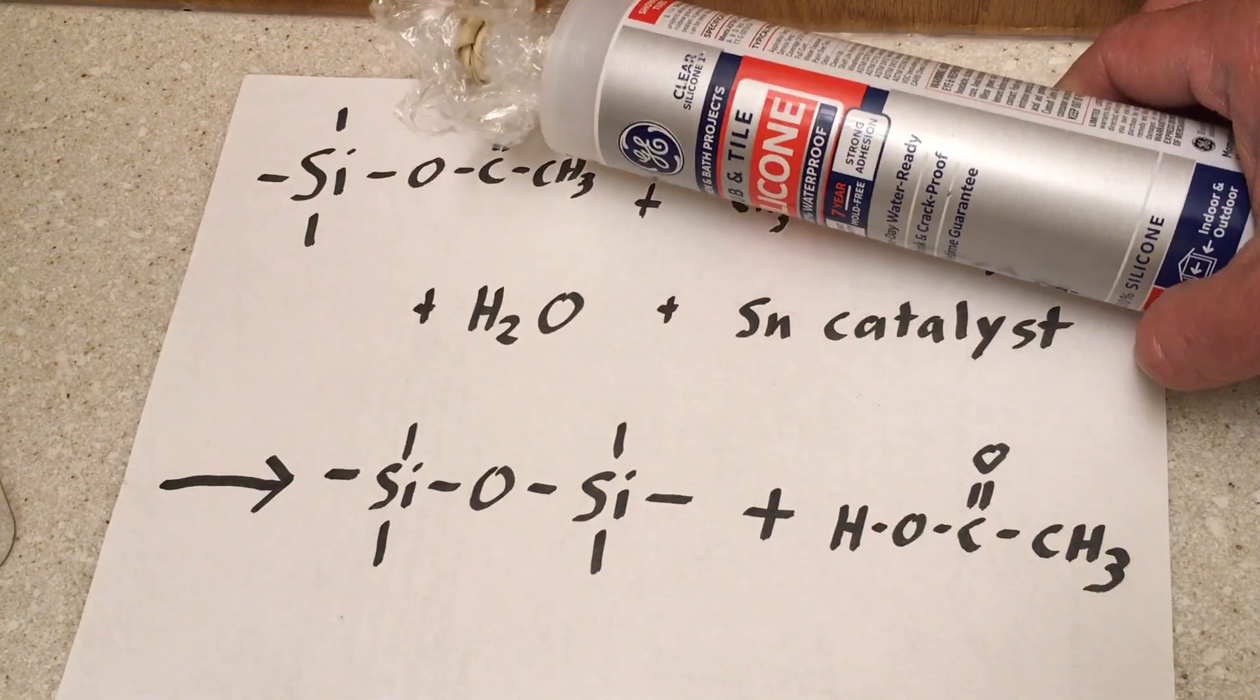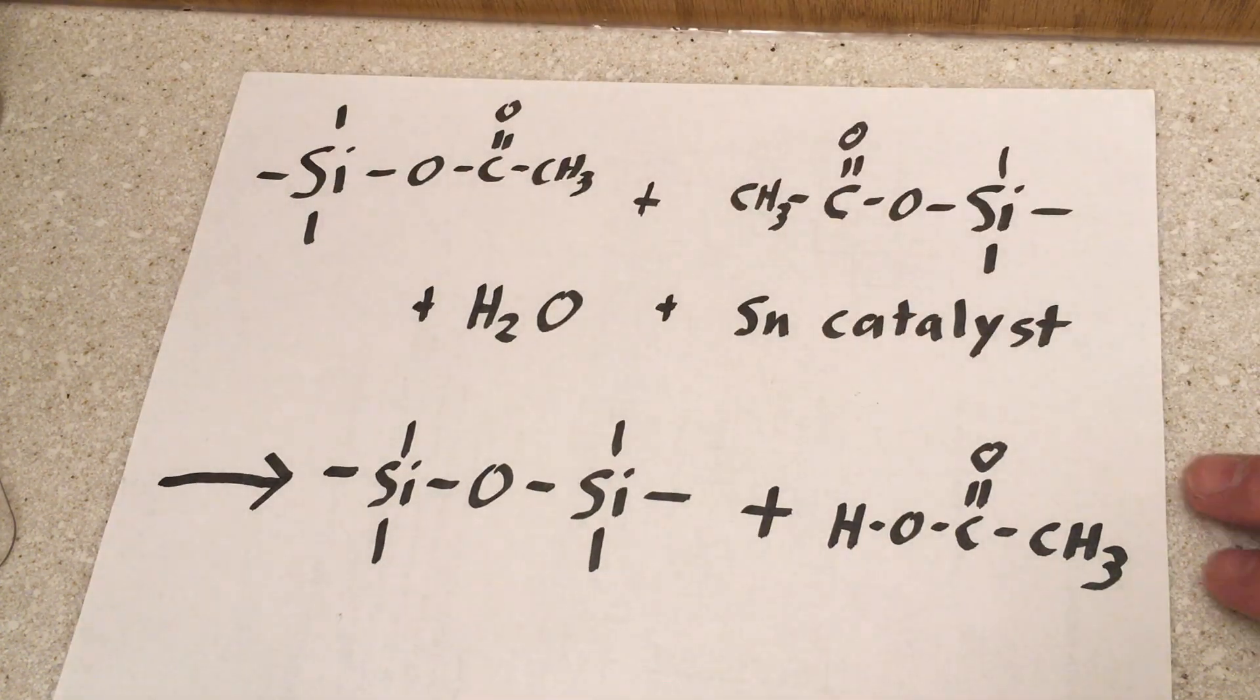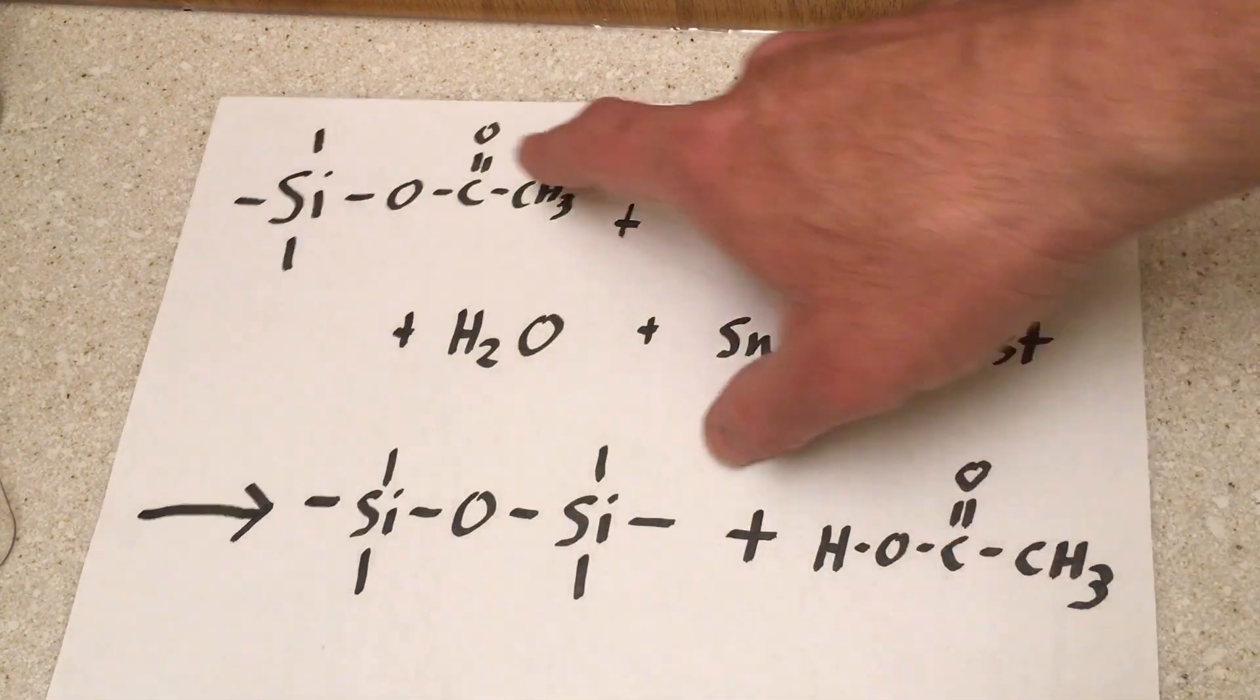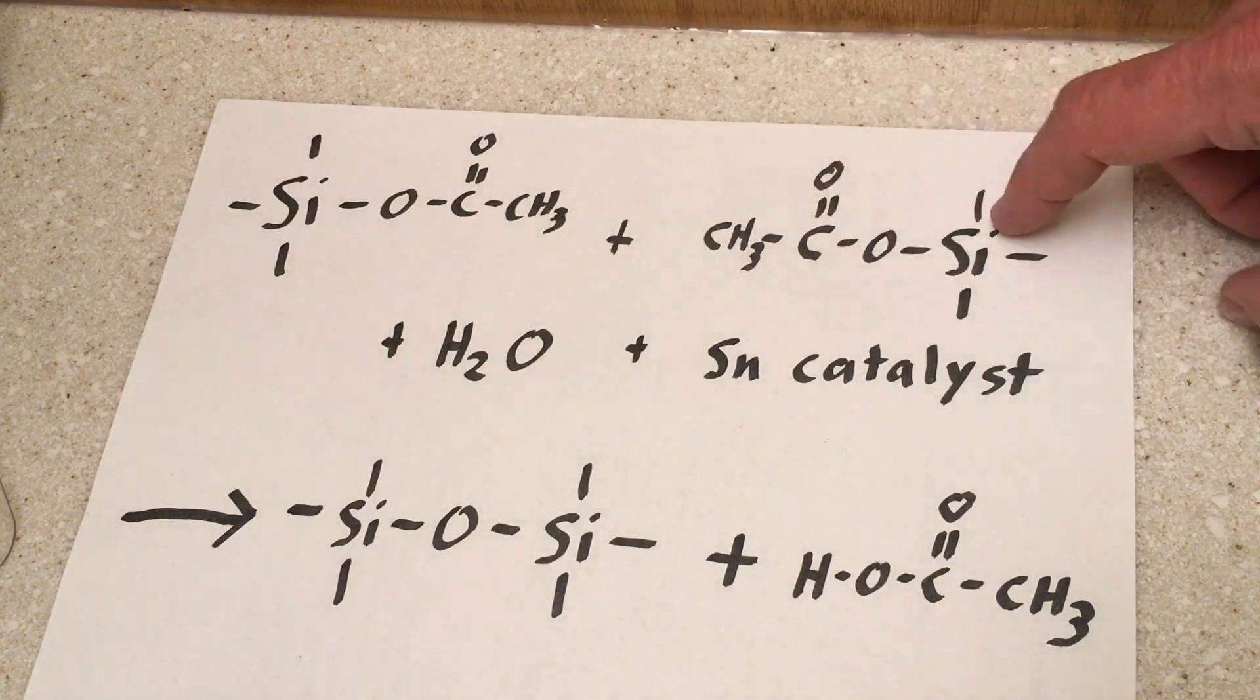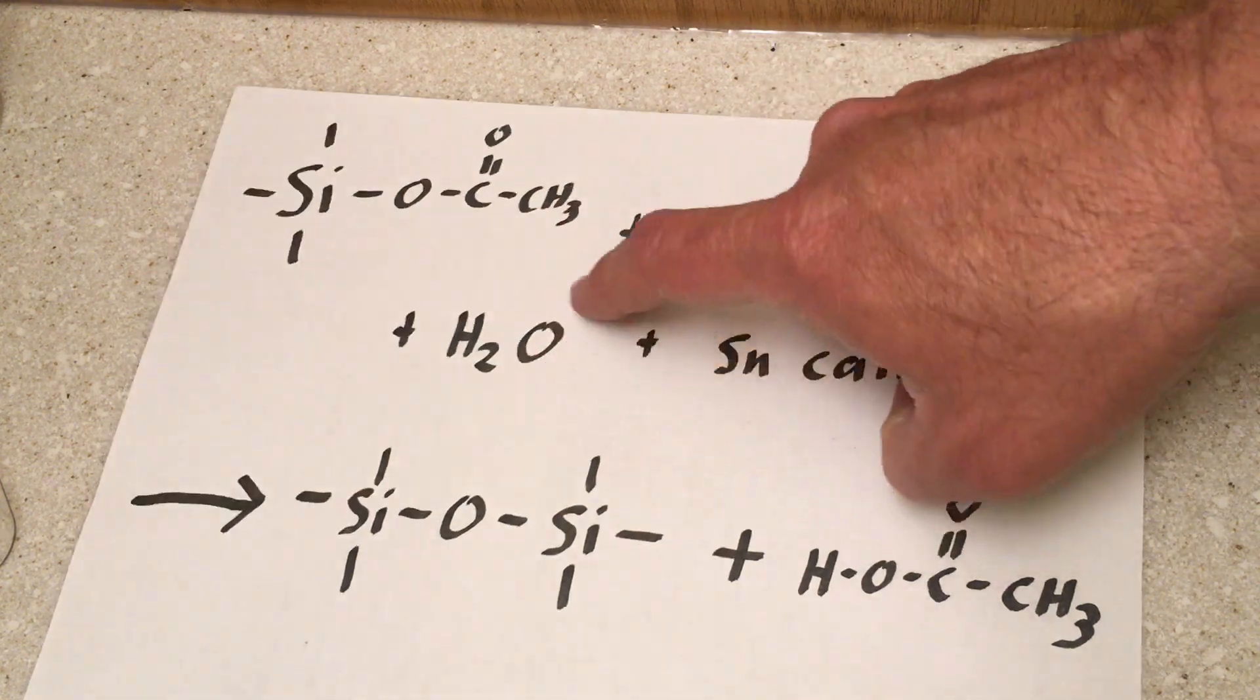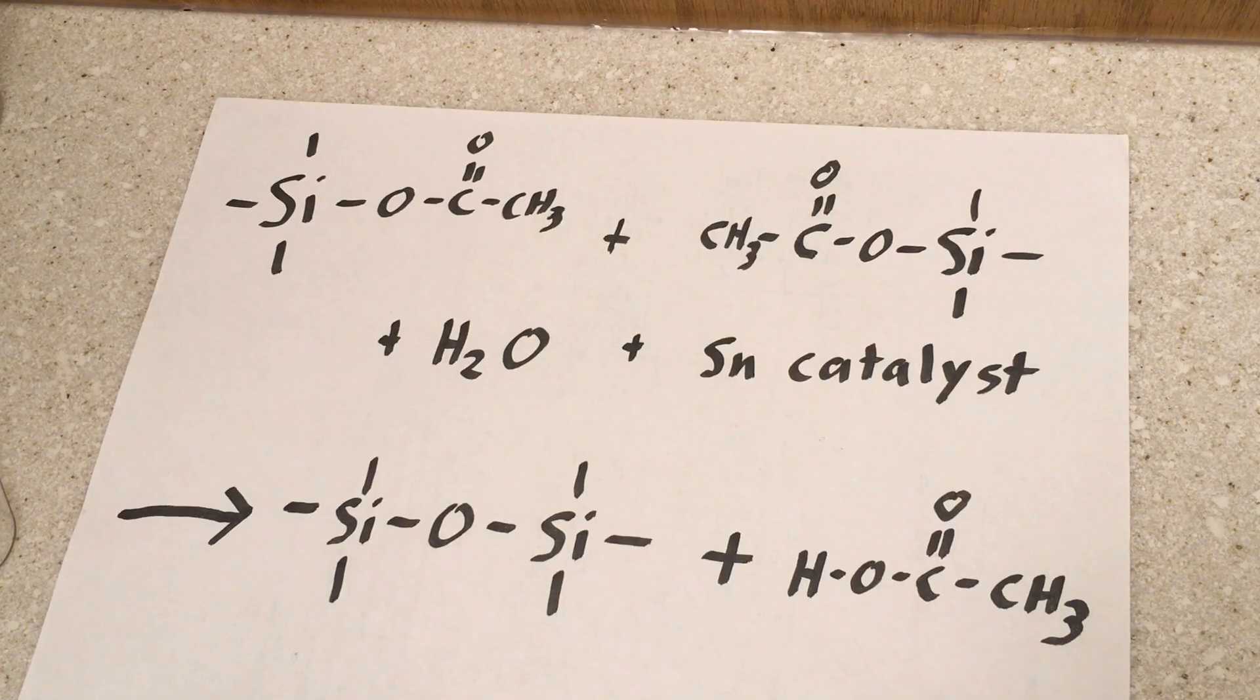So, there are a couple different techniques for cross-linking the polymers together. In the case of caulk like this, what is often used is a cross-linking technique where we have on some of the silicons, instead of methyls, we have these sorts of groups here. And if I have a silicon attached to this group here, and a silicon attached to the same type of group over here, this will react with water, and sometimes a tin compound is added to help the reaction along. It's a catalyst.